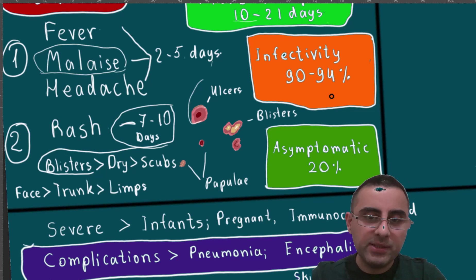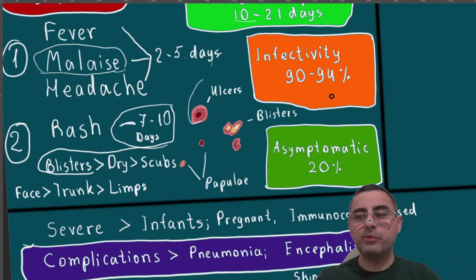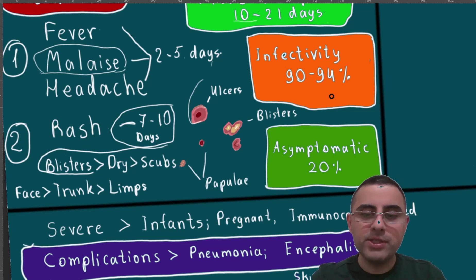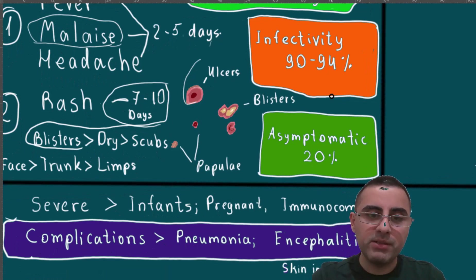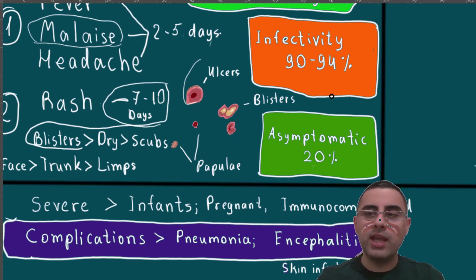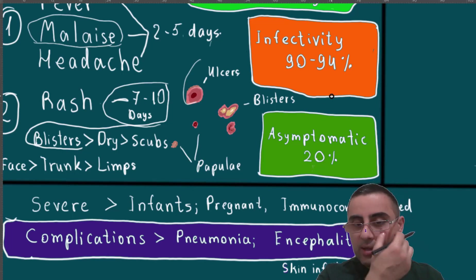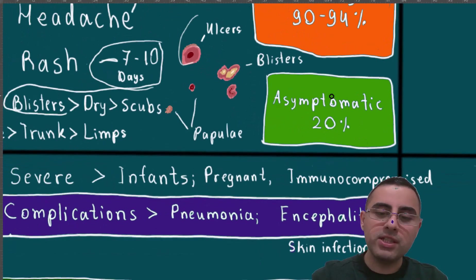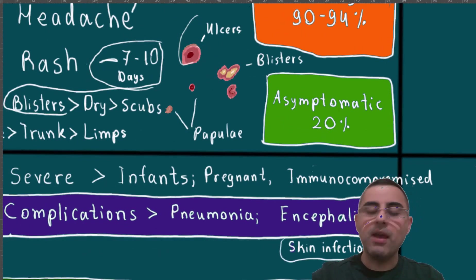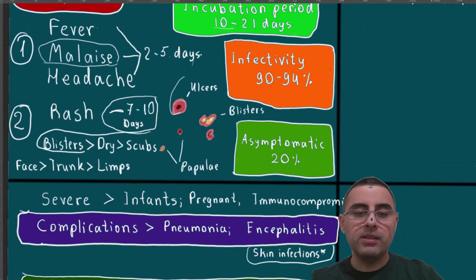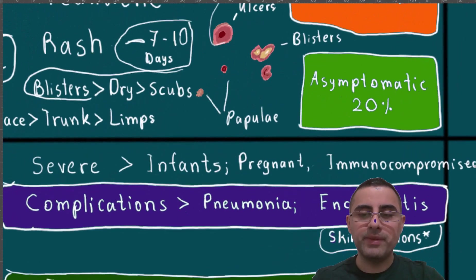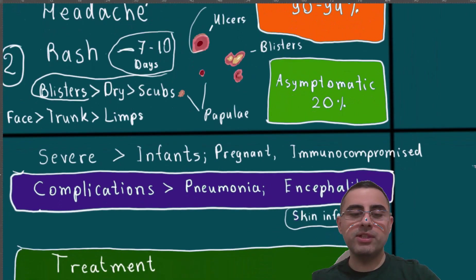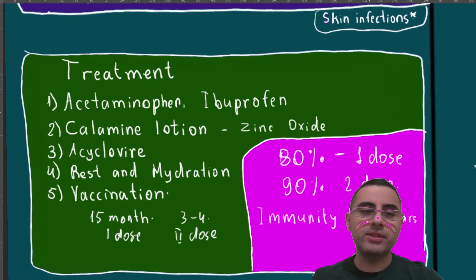The disease course is usually mild and lasts around two to three weeks. However, severe infection can occur especially in infants, pregnant women, and immunocompromised patients. The most common and important complications are pneumonia, encephalitis, and secondary skin infections from blisters. These complications are not common, and very rarely chickenpox can be deadly.